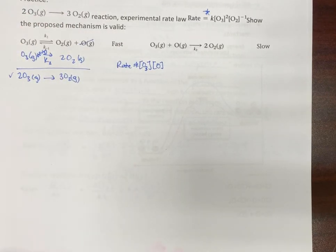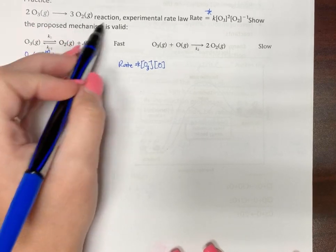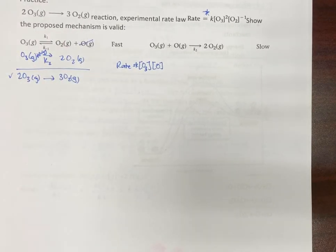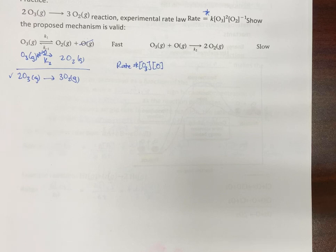That's not going to work because oxygen isn't in our original equation. So we have to get rid of it. So that means we go to our fast reaction here and we need to put it at equilibrium.